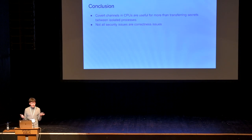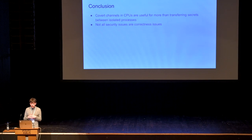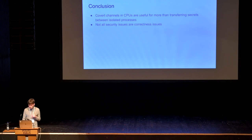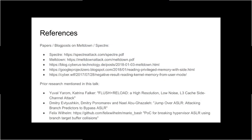In conclusion, there are covert channels in CPUs, and they're useful for more than just transferring secrets between trust domains that are supposed to be isolated from each other. While most security issues are correctness issues, not all security issues are correctness issues.